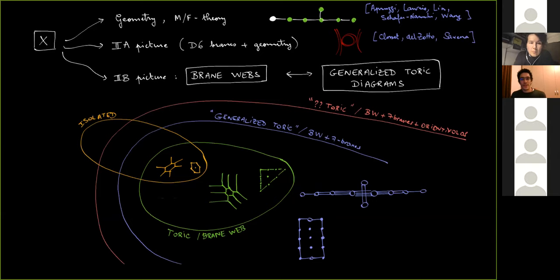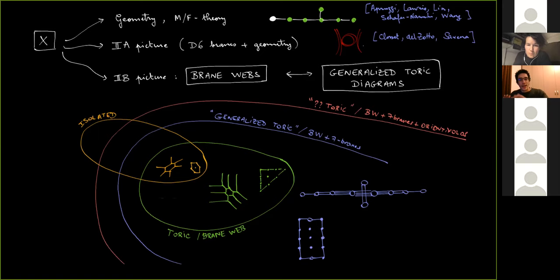Before going into the geometry of the Higgs branch, I want to focus on a particular class of 5D SCFTs, associated to a particular class of singularities X. The singularity X can be engineered using M-theory or F-theory, depicted using non-conformal combined fiber diagrams. You can also have a mixed brane-and-geometry picture using type IIA, with six-branes wrapping certain cycles. But in this talk, I will focus on a type IIB picture, in which everything is described by branes — specifically, brane webs consisting of NS5, D5, and D7 branes.